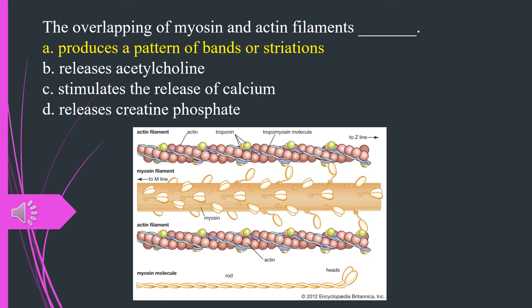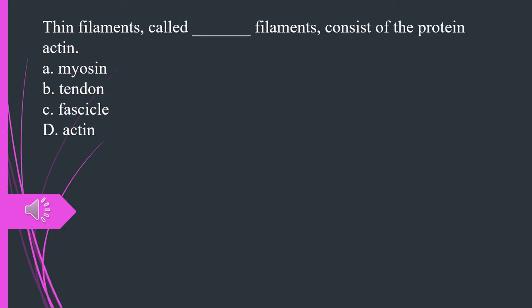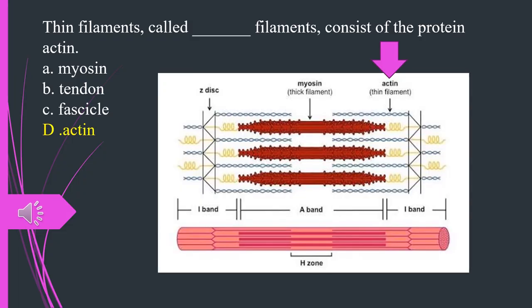Thin filaments consist of the protein A. Myosin. B. Tendon. C. Fascicle. D. Actin. The answer is D. Actin.